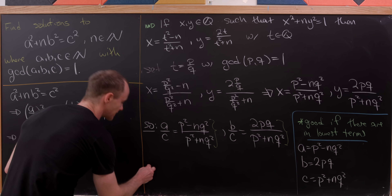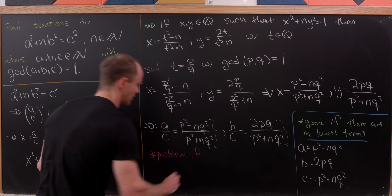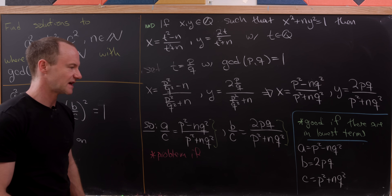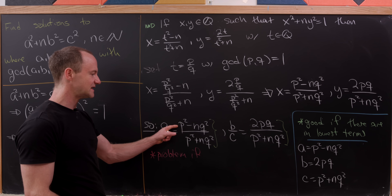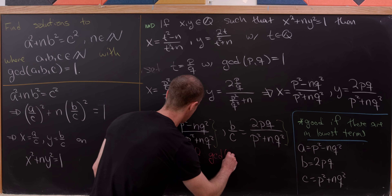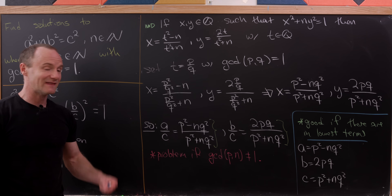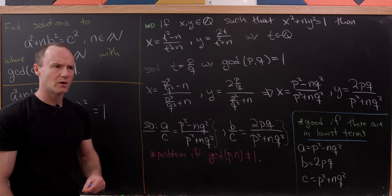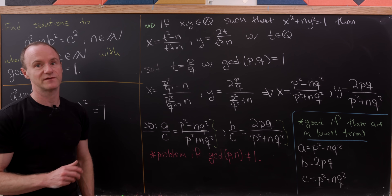There is a problem if the numerator and denominator do share common factors. It turns out the numerator and denominator in both expressions share common factors exactly when gcd(p, n) ≠ 1, and in that case we will miss some solutions. Let's look at an example where this occurs.